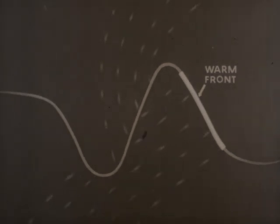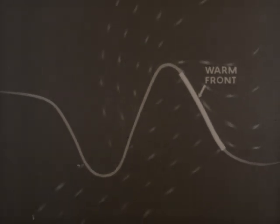It advances against and rises over the cold air ahead of the front. The cold front is colored blue on the weather map. The warm front is shown in red.